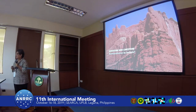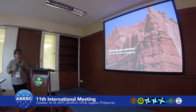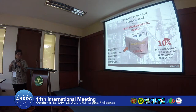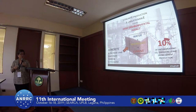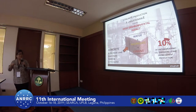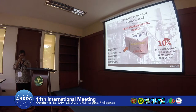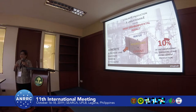Concrete is the most used material in the world, but its production is unsustainable because of the high environmental impact. To produce concrete, you need water, aggregate, and cement. It is the production of cement that causes high carbon dioxide emissions — about 10% of global carbon dioxide emissions.